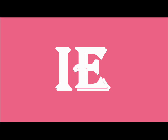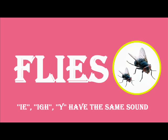Letters IE. Phonic sound: I. Example word: Flies. F-L-I-E-S. Flies. Repeat sound: I. I. I.